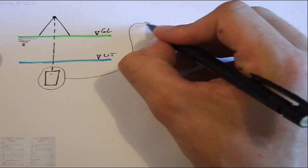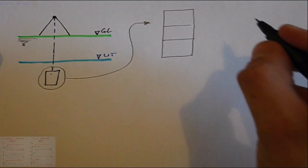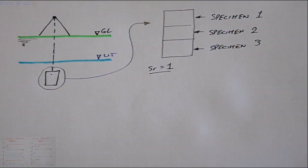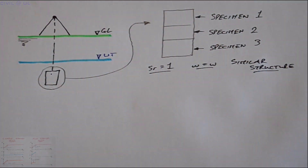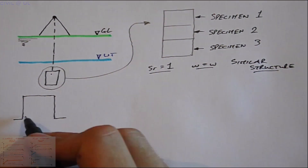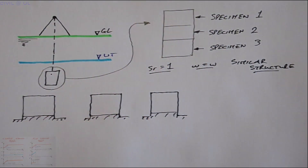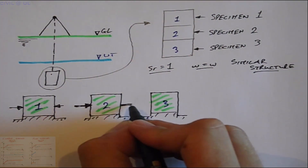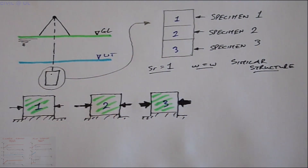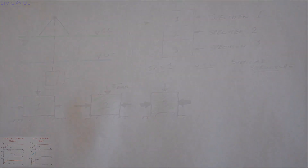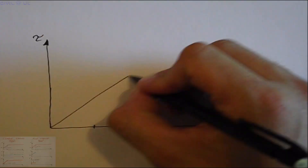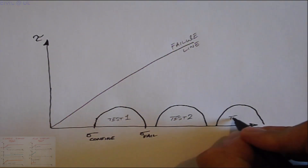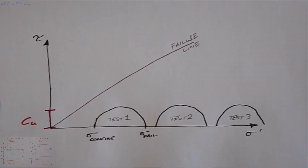Hence the soil grains are prevented from reconfiguring into a denser, stronger structure. The consequence of such behaviour can be seen if we test three specimens that are fully saturated, have the same moisture content, and a similar soil structure. The application of an increasing confining pressure in each test will simply mean that the pore water pressure in each specimen is increased by the same amount. No change in effective stress occurs as the pore water carries the additional load, and the shear strength measured, Cu, will be the same irrespective of the confining pressure.